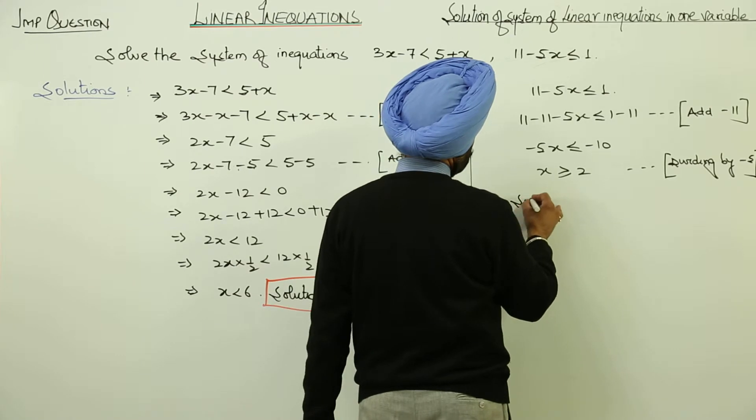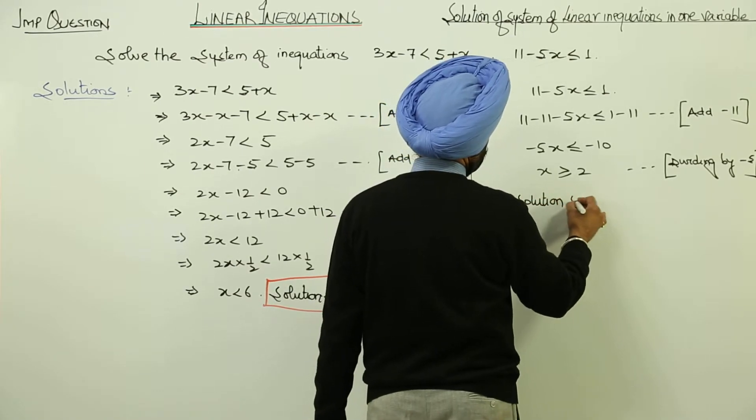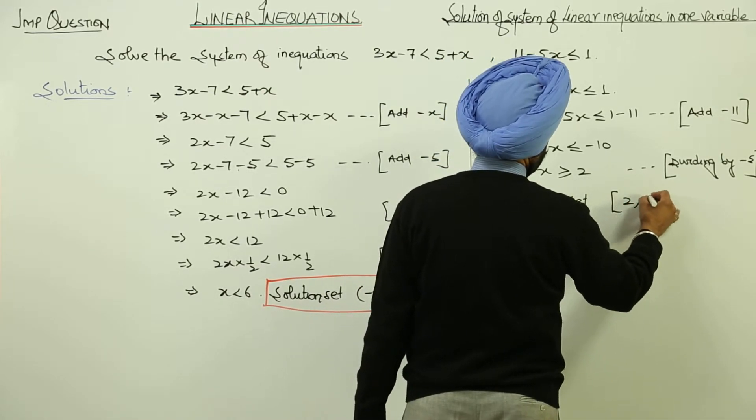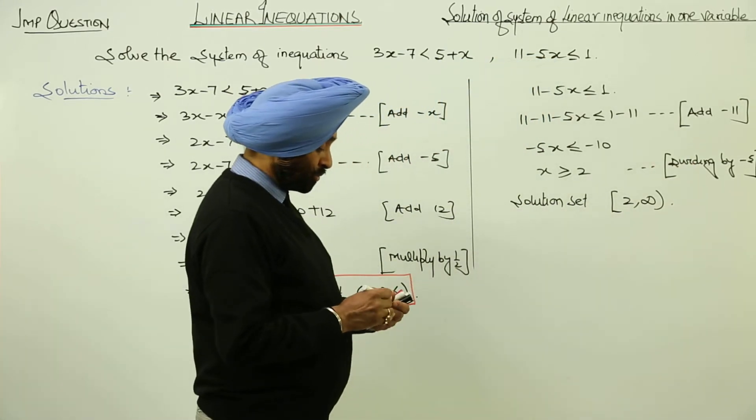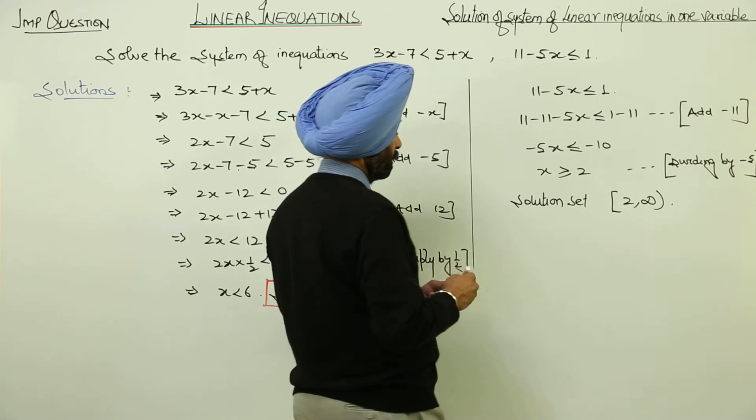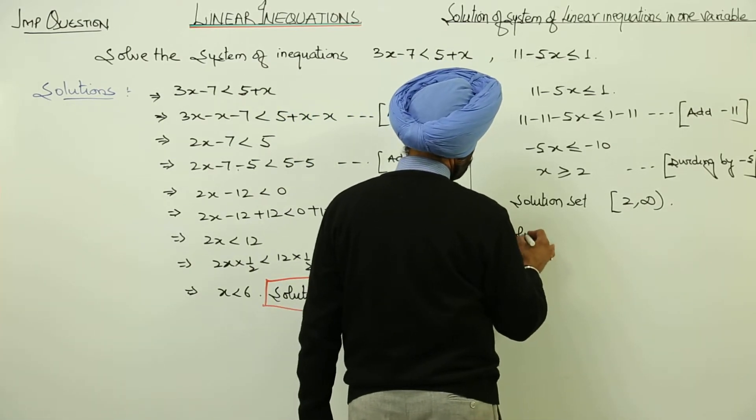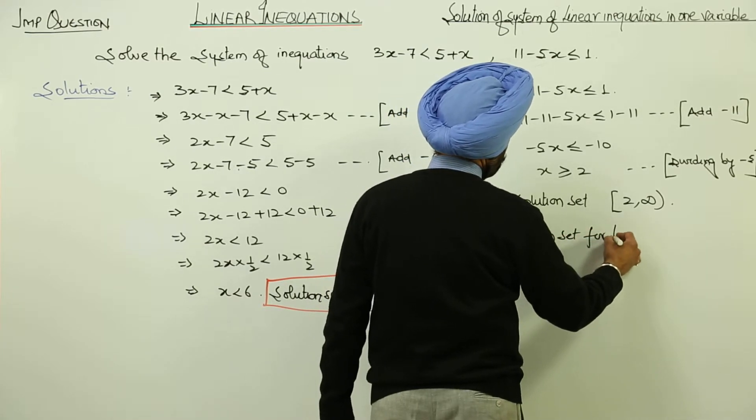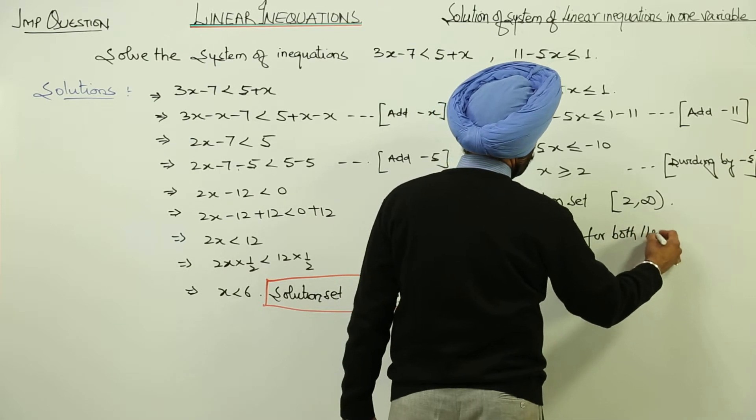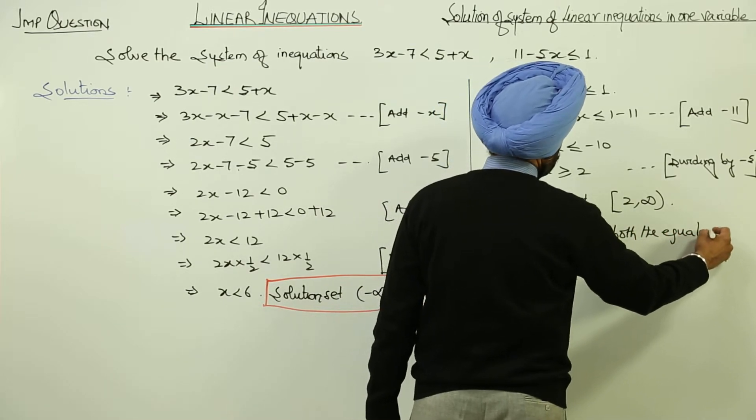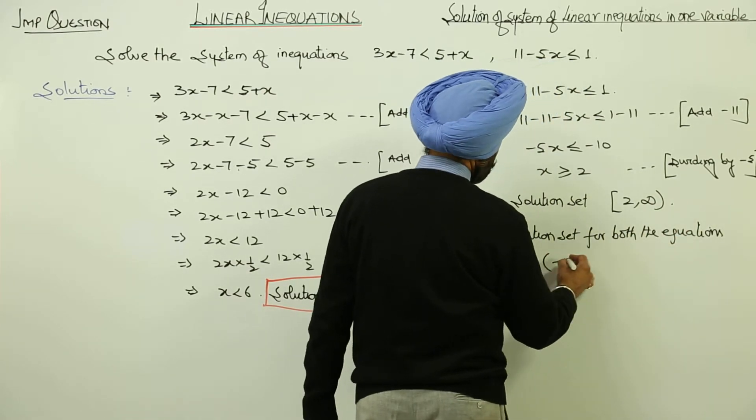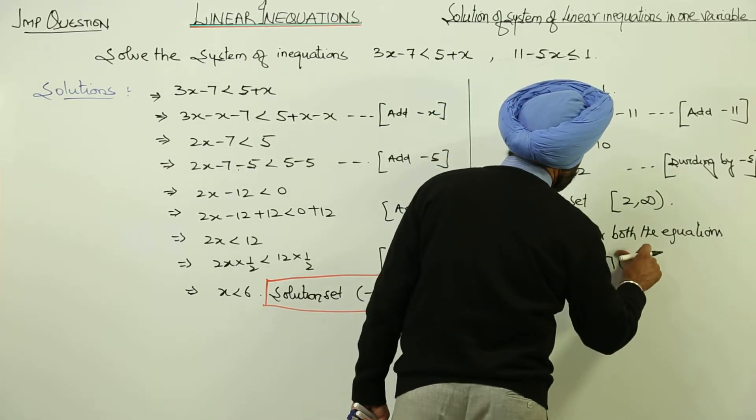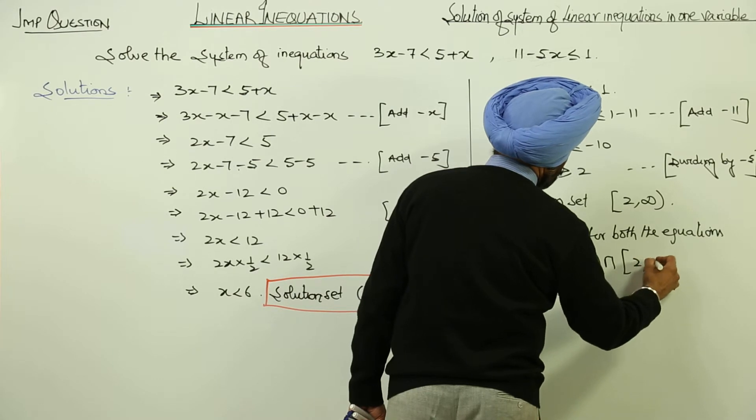Now, solution set for the second equation is 2 to infinity. The solution set for both the equations becomes negative infinity to 6 intersection with 2 to infinity.